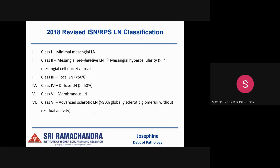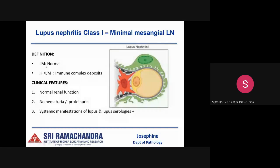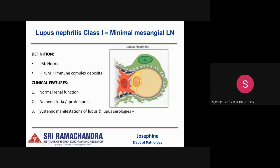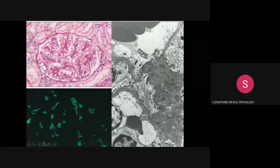Class 1 is defined by a normal appearance on light microscopy, with immune complex deposits identified only by immunofluorescence or electron microscopy — mesangial deposits. Clinically, patients present with normal renal function and very mild or no hematuria or proteinuria, though systemic manifestations of lupus are present and serologies (elevated ANA, dsDNA, low complement levels) are positive. The light microscopic picture shows a normal-appearing glomerulus with unremarkable basement membrane and no significant hypercellularity.